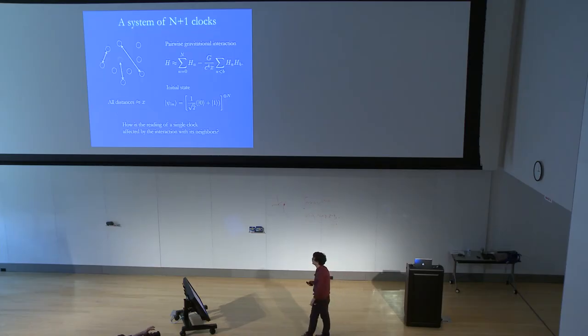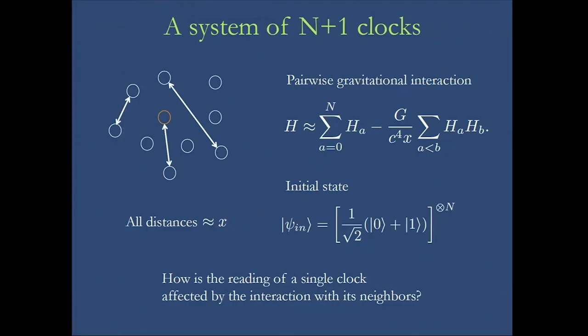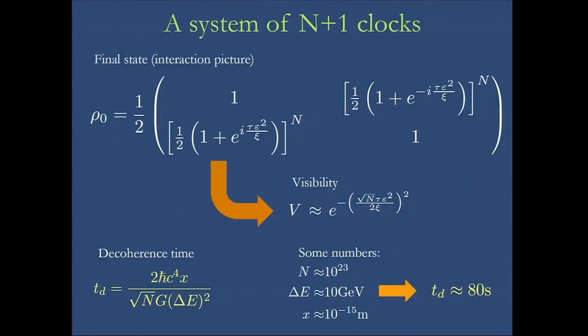We can do the same analysis for n clocks. We ask what is the reduced density matrix for this clock when it interacts with n other clocks that are surrounding it. We take the generalization of the Hamiltonian before and the density matrix looks like this. It has some coherences that get lost.